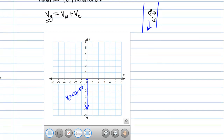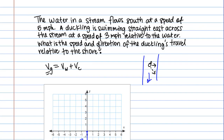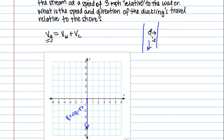We can do the same for the velocity of the duck relative to the water. It's swimming straight east at 3 miles per hour relative to the water — straight east is the positive x-direction with magnitude 3. So that velocity vector, written by components, is (3, 0).